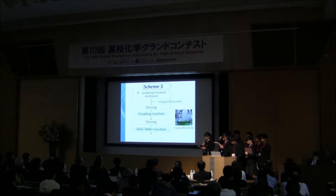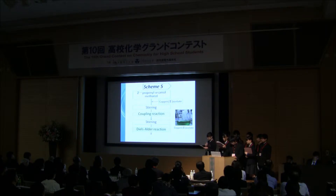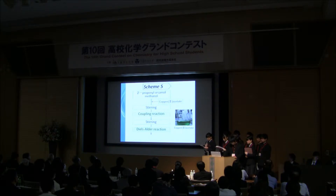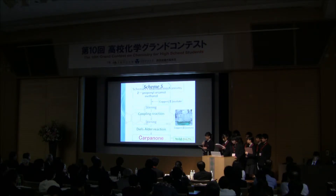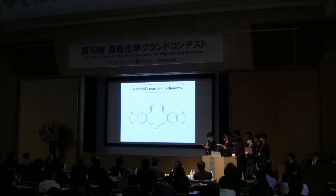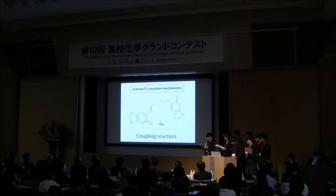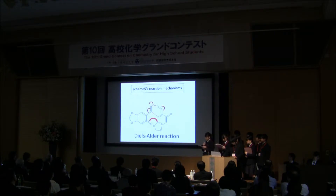Scheme 5 can be done with quite simple operations. First, we added trans-2-propenyl sesamol to methanol solution. Then, we added copper(II) acetate to the solution. And thirdly, we repeated purification three times. The yield was quite low, 0.62%. Scheme 5's reaction mechanism is as follows: when Cu2+ combines with the phenolic hydroxyl group, two trans-2-propenyl sesamol molecules couple, and at the same time, cyclization reactions continuously occur based on an oxidative coupling reaction. Then, carbanol is synthesized in one step. This is an amazing way of synthesizing the compound, and its molecular conformation completely agrees with that of natural carbanol.